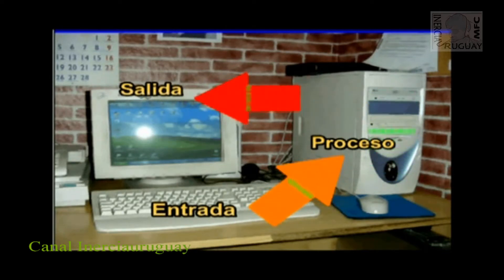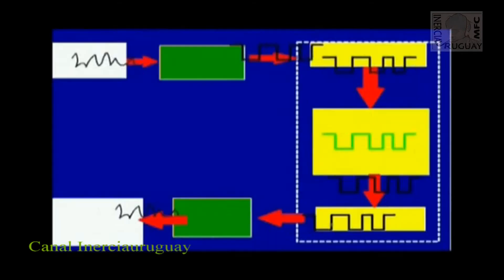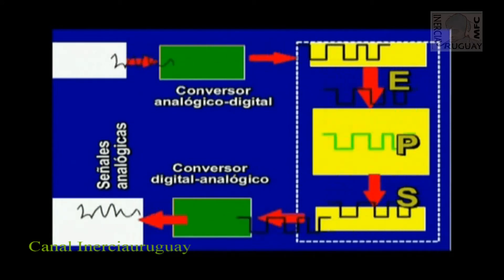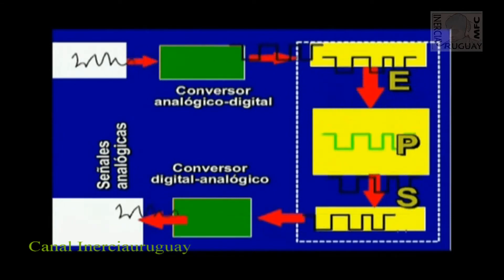Entrada de información digital, proceso de información digital y salida de información digital. Esto quiere decir que el procesador no trabaja con información analógica, sino digital. Pero como la mayoría de información exterior en su origen es de forma analógica, es preciso que existan unos interfaces que conviertan la información analógica en digital. Esto lo realizan unos aparatos llamados conversores analógico-digitales.